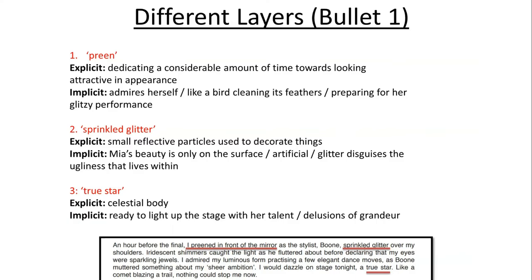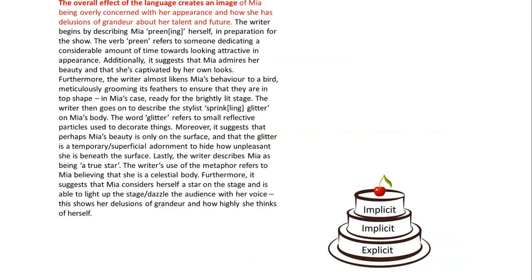A true star — of course that means a celestial body. Implicitly, it could be referring to Mia being ready to light up the stage with her razzle-dazzle, and of course the fact that she has these delusions of grandeur. Now let's take a look at a response which includes those three images. The overall effect of the language creates an image of Mia being overly concerned with her appearance and having delusions of grandeur about her talent and future. The writer begins by describing Mia preening herself in preparation for the show. The verb preen refers to someone dedicating a considerable amount of time towards looking attractive in appearance.